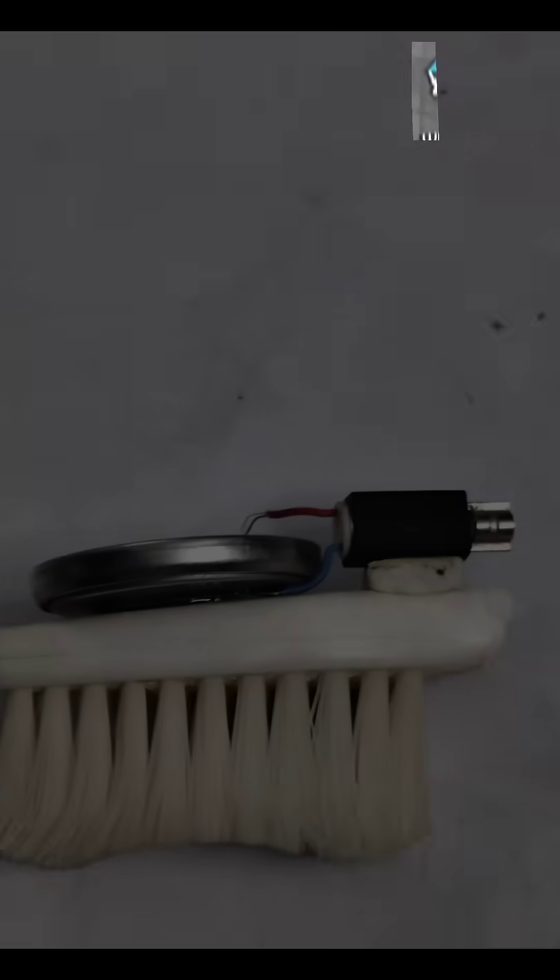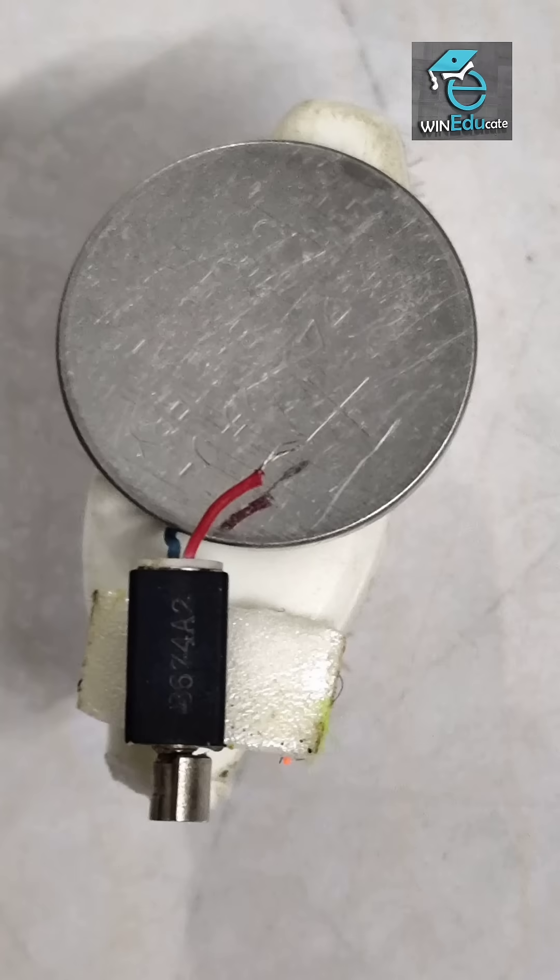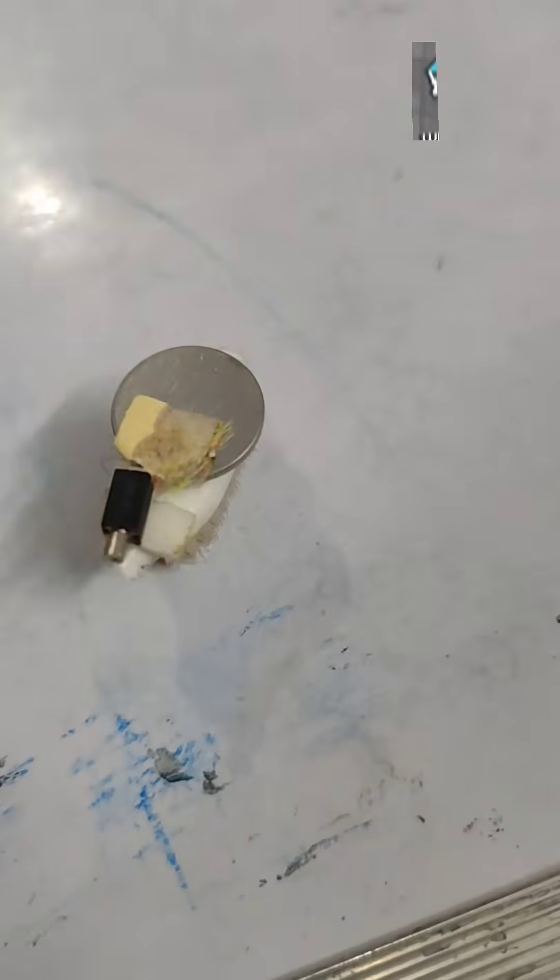How it works: 1. Attach the motor to the top of the toothbrush head. 2. Connect the motor wires to the battery using tape. 3. As soon as the motor gets power, it vibrates. 4. The vibrations move through the toothbrush bristles, making the bot scoot around.